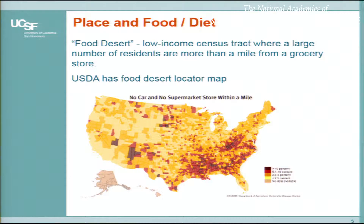For a specific example related to place and food or diet — Julie, Craig, and Joe all mentioned access and availability to having food stores. There's a phrase introduced by the USDA called the food desert, which maybe some of you have already heard about. The census and the USDA both make available data around where food stores are by census tract. If it's a census tract classified as low income where there are a large number of residents more than a mile from a grocery store, that's referred to as a food desert. This is a screenshot of the USDA food desert locator map — you can put your address in and see if it comes up in a food desert.